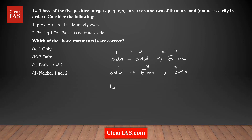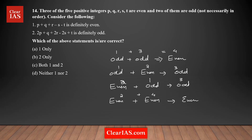Similarly, even plus odd also gives an odd result — for example, two plus one equals three, which is odd. And when you add two even numbers, for example two plus four equals six, the result is always even.